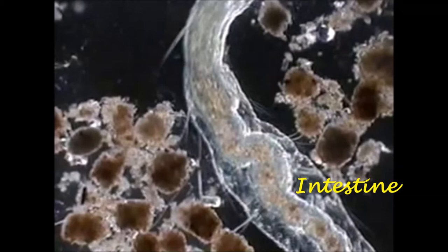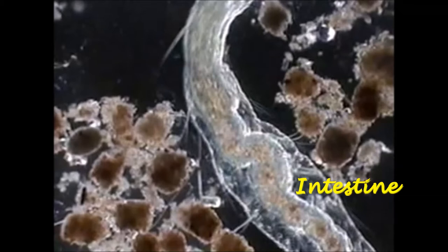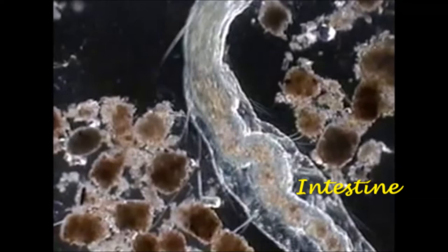Annelids are more complex than the other worms. They have more developed organ systems: muscular, circulatory, and nervous systems. Earthworms and leeches are annelids.